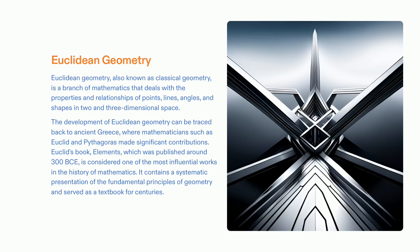Euclidean geometry provides a powerful way to explore our universe, both real and imagined. It is an ancient and important branch of mathematics which has shaped our understanding of the world around us. Euclidean geometry was developed in ancient Greece by mathematicians such as Euclid and Pythagoras, and has been used in many different fields since then. It is a cornerstone of architecture, engineering, art, and game design, helping us understand concepts such as symmetry, proportion, and the physical and virtual worlds we inhabit. By studying Euclidean geometry, we can gain a better understanding of our universe and the way it works.